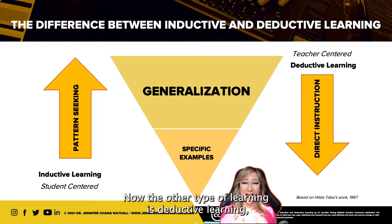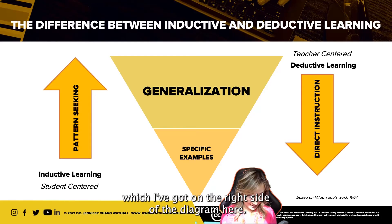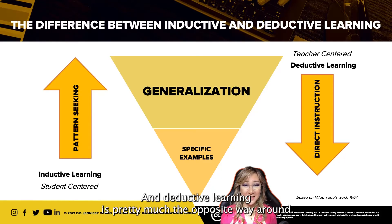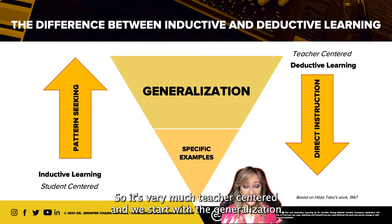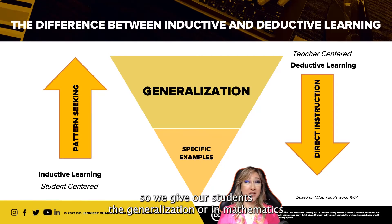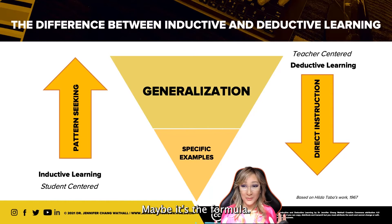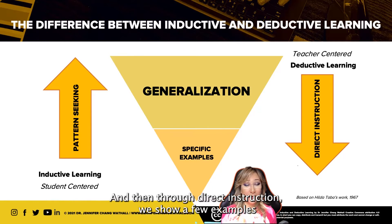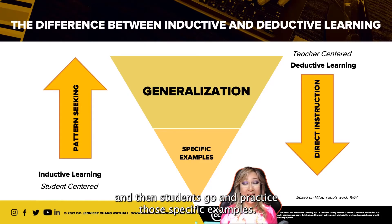The other type of learning is deductive learning, which I've got on the right side of the diagram here. Deductive learning is pretty much the opposite way around. It's very much teacher-centered and we start with the generalization — we give our students the generalization, or in mathematics, maybe it's the formula. Then through direct instruction, we show a few examples and then students go and practice those specific examples.